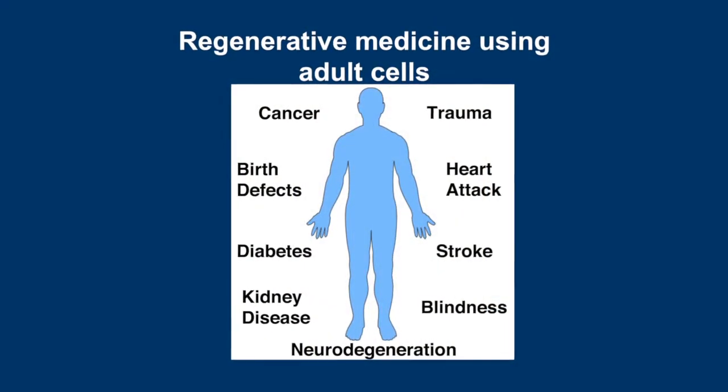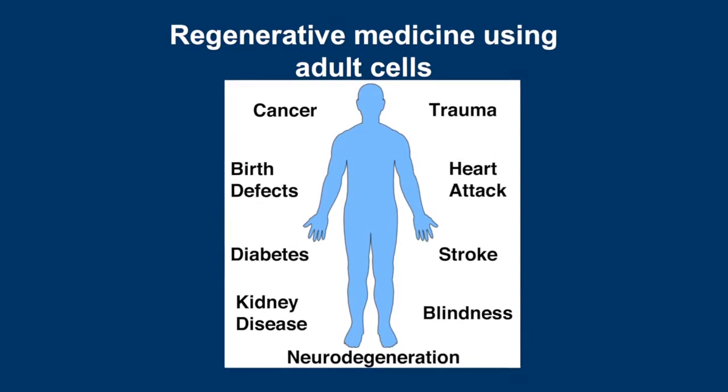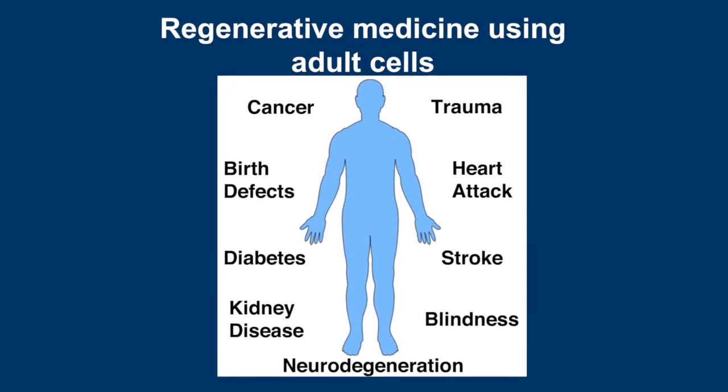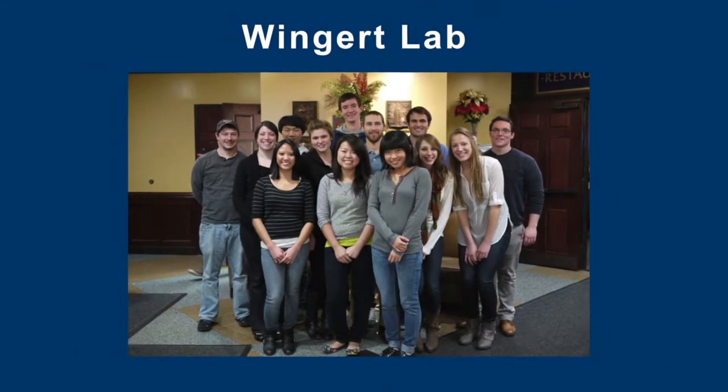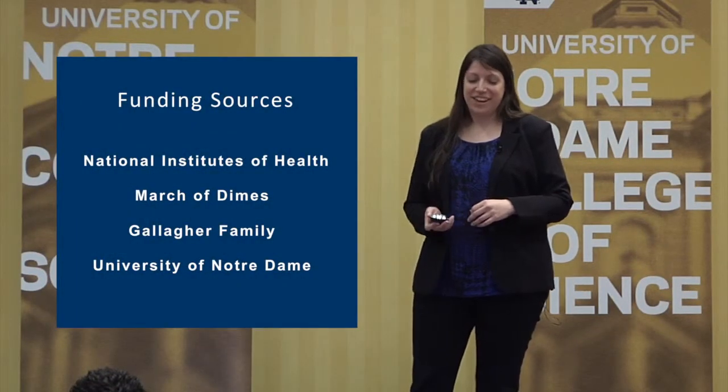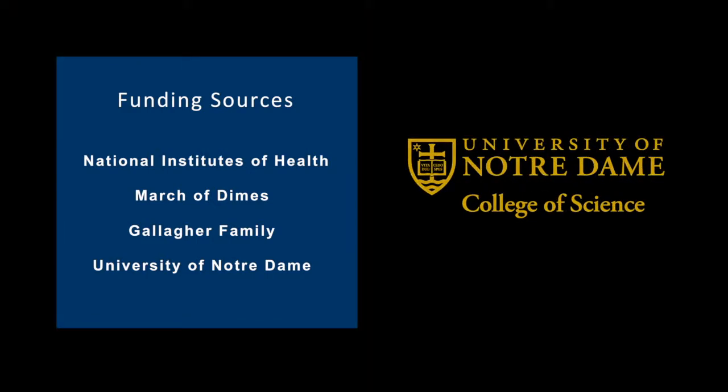We are trying to understand what signals the fish use to detect damage and initiate new cell production, and whether we can apply them to people. These approaches can be used for kidney disease, but other researchers at our university and elsewhere are applying similar questions to other conditions — like regenerating the retina to treat people who are blind. All the data I showed you from the fish came from my lab at Notre Dame. I want to thank the folks who do the work in my lab and the agencies that fund us. Thank you so much for your attention.